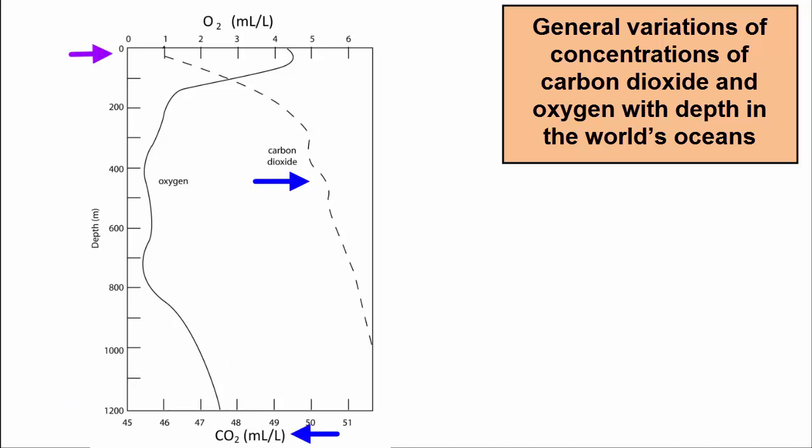For the carbon dioxide line, we see the lowest values, 45 milliliters per liter, so still pretty high, at the surface, and then a steep increase from the surface to 300 meters, and an even steeper increase as we descend below 300 meters towards the seafloor.